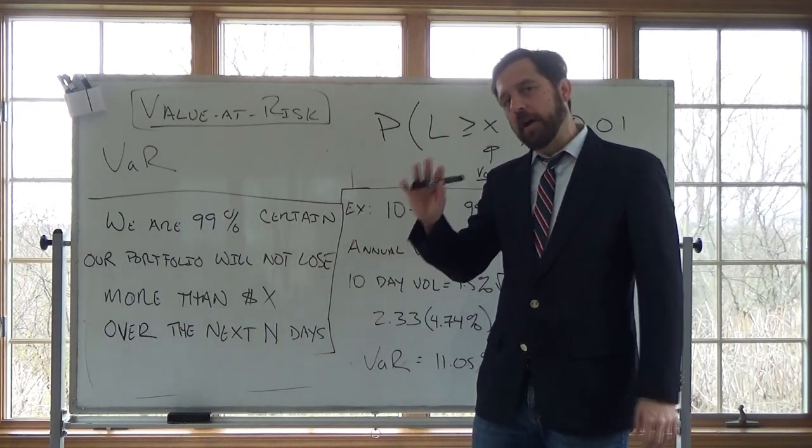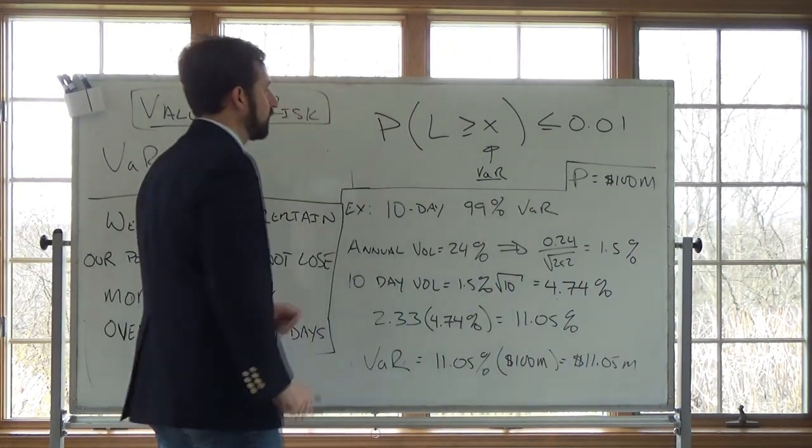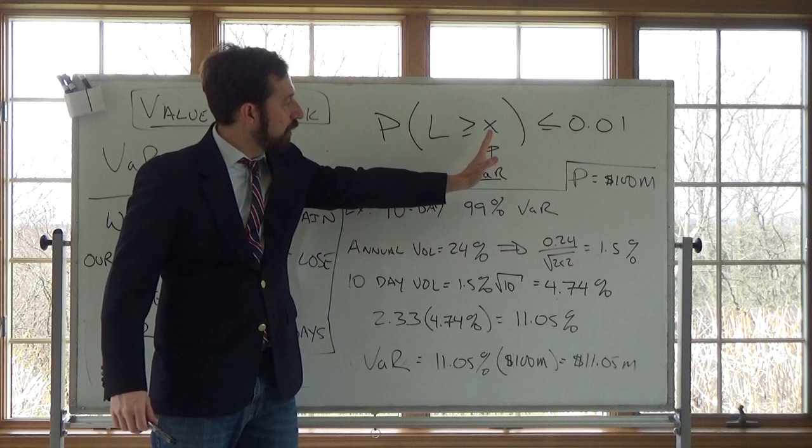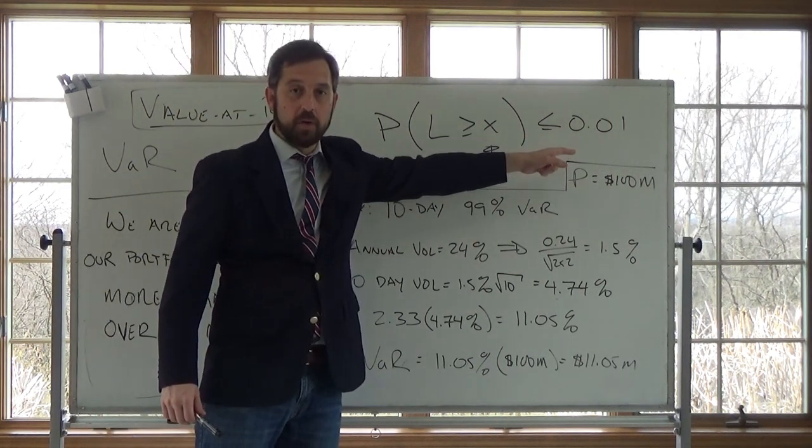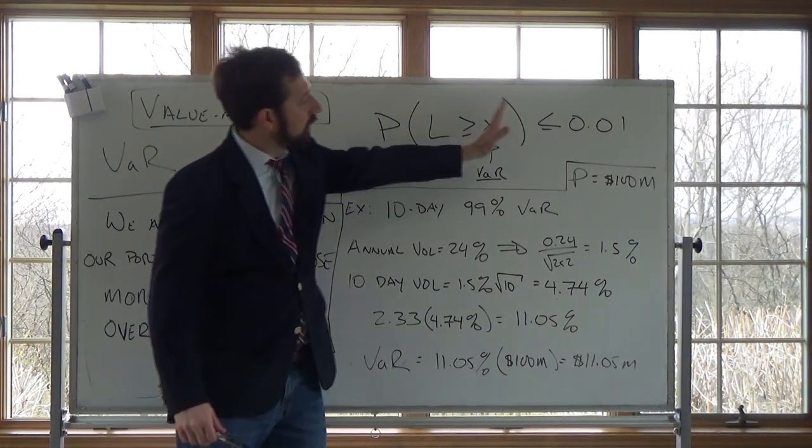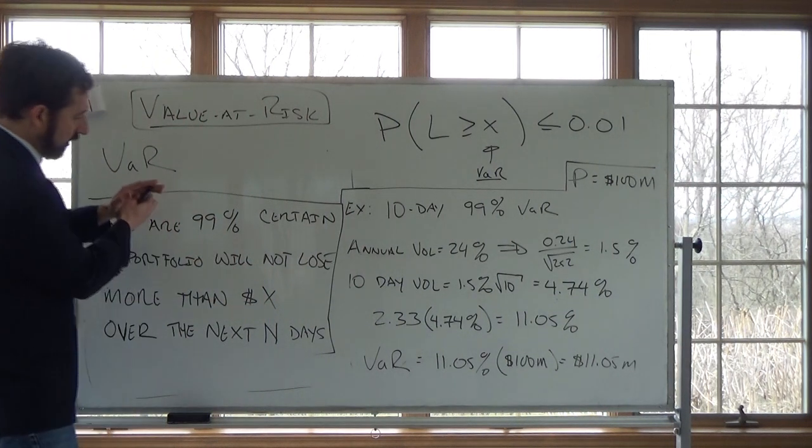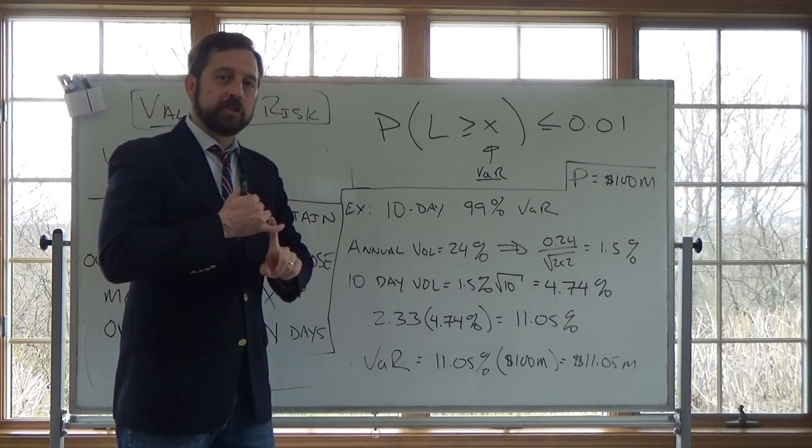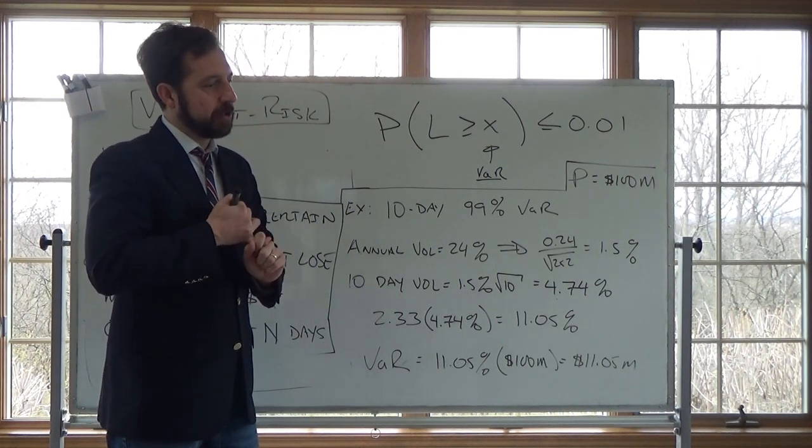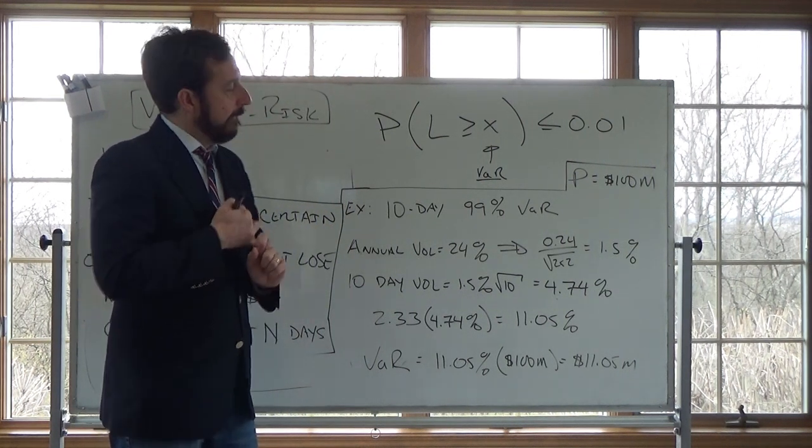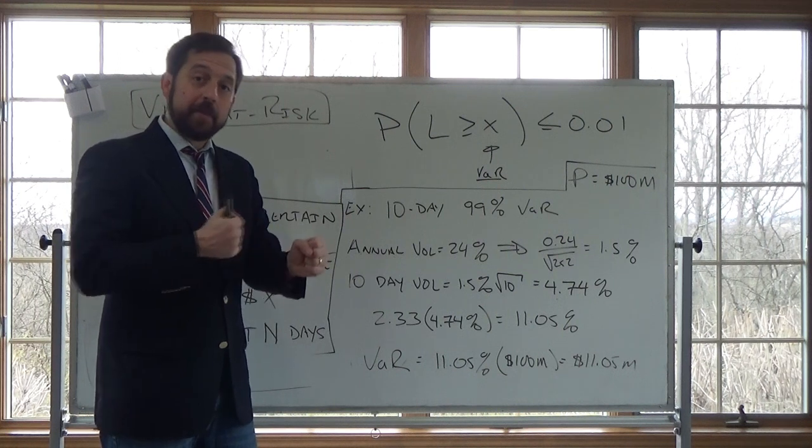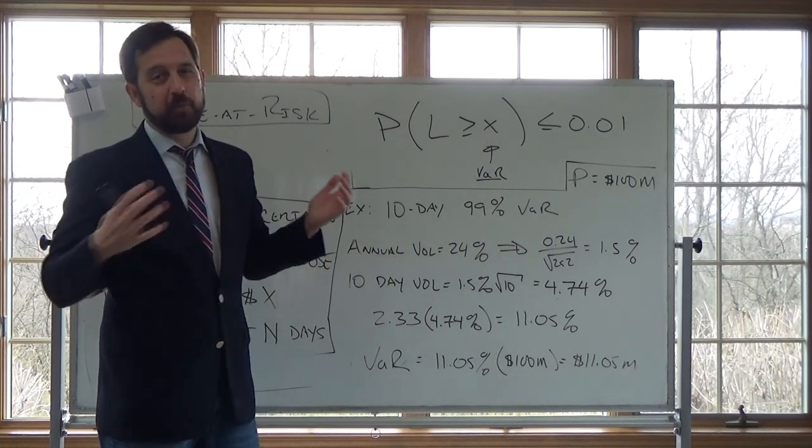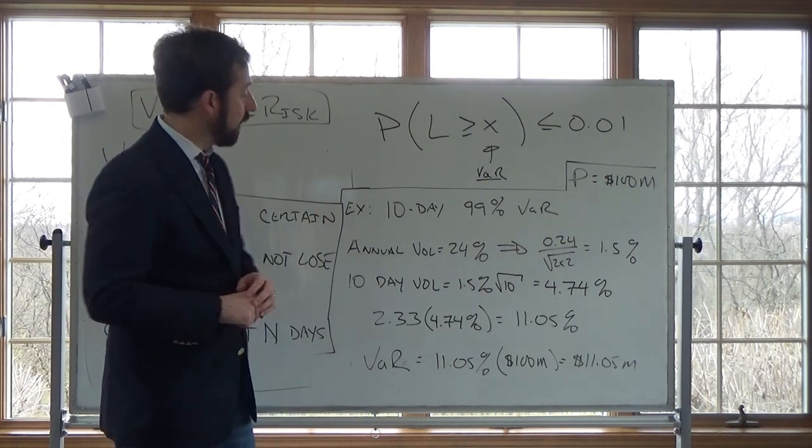This is often compactly written as: the probability of our loss greater than or equal to the VAR that we want is less than 0.01. So let's go through a brief example. I'm going to assume here that the portfolio returns are normally distributed, and I'm also going to assume independent increments, changes in our portfolio over time. This is what's usually done in your first calculation of VAR.